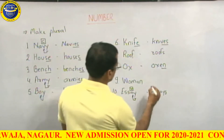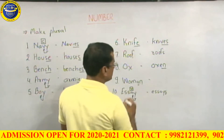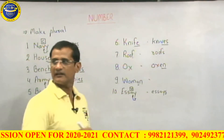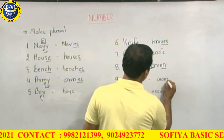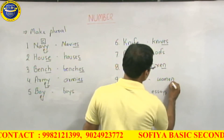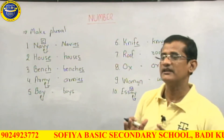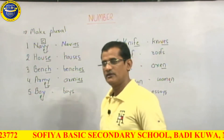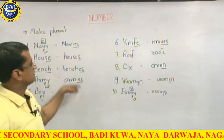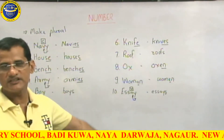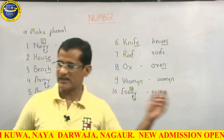And for Women, we change the inside vowel — A changes to E — giving us W-O-M-E-N. So this is how we can apply the rules and change singular nouns to plural. This is how we can change some words using the rules we have learned.